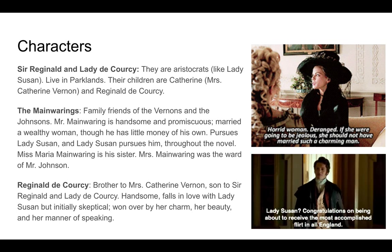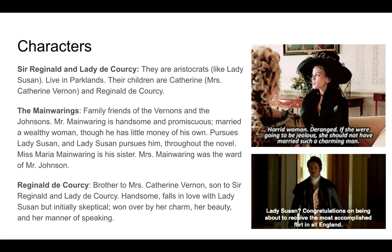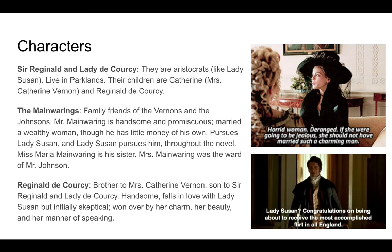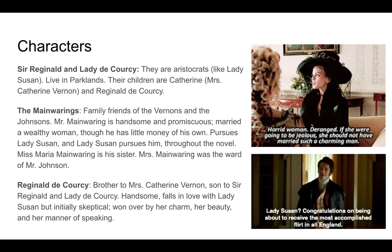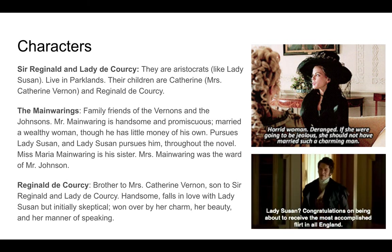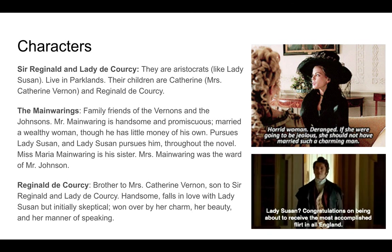There is also a group of people called the Manwarings — a family who are friends of the Vernons and also the Johnsons. Mr. Manwaring is very handsome and quite promiscuous. He married a wealthy woman, though he has only a little money of his own. He pursues Lady Susan, and they have an extramarital affair throughout the novel. Miss Mariah Manwaring is his sister, and his wife, Mrs. Manwaring, was the ward of Mr. Johnson — that's how they're connected.